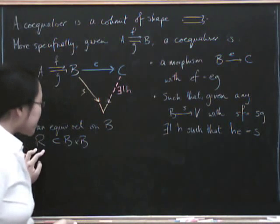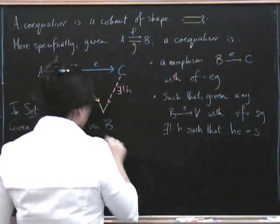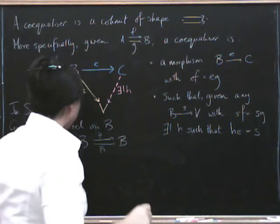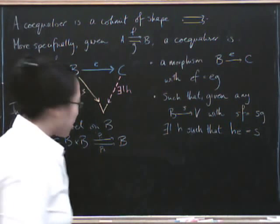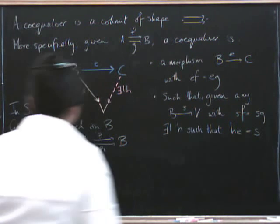So R is the subset which consists of just those pairs of elements that are equivalent to one another. But it comes equipped with projection map P1 and P2 back down to B because these are fundamentally just pairs of elements. So we can either take the first element in that pair or the second element in that pair.